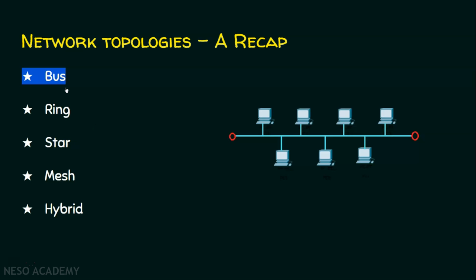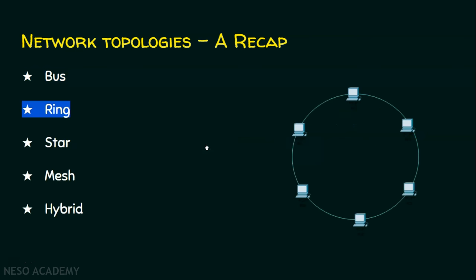In a bus topology, we will have a common transmission medium and all data traffic will flow through this transmission medium only, and this traffic will be in both directions. Coming to the ring topology, this is a bus topology but in a closed loop, and one more point to note here is that it is a unidirectional communication, and all data traffic will flow in one direction only.